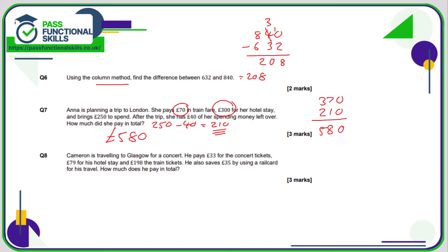With question 8, we can work out the concert tickets and the hotel combined. That is 33 plus 79. Three plus nine is 12, carry the one. Seven plus three is 10, plus the one is 11. So that is 112 for concert and hotel. Now what about the train tickets?